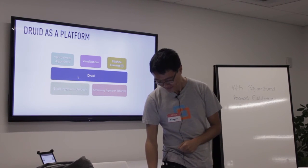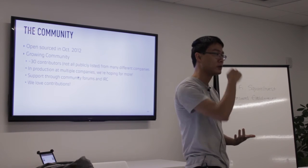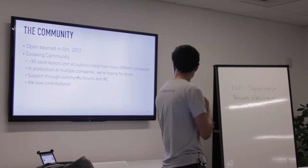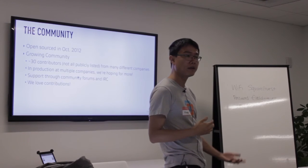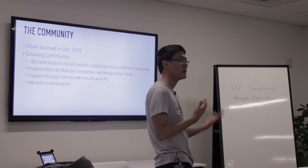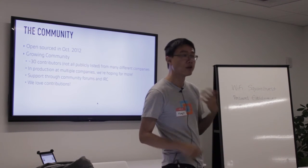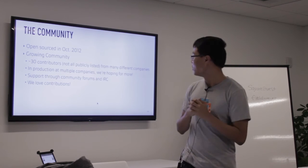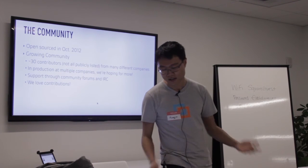In terms of the Druid community, we were open sourced in October of 2012 — almost exactly one year ago. We have a growing community of about 30 contributors from a variety of different companies. Druid is in production at several companies already, with more information on our website. Our support is mainly through community forums and IRC. We really love contributions of any kind — whether through docs, answering questions, or code itself.